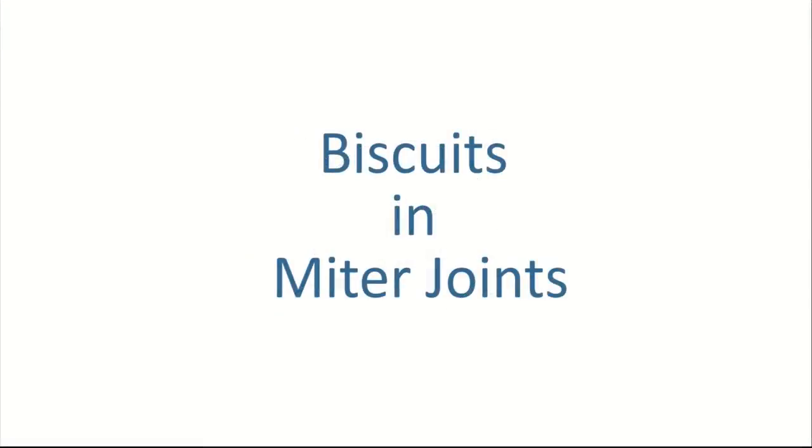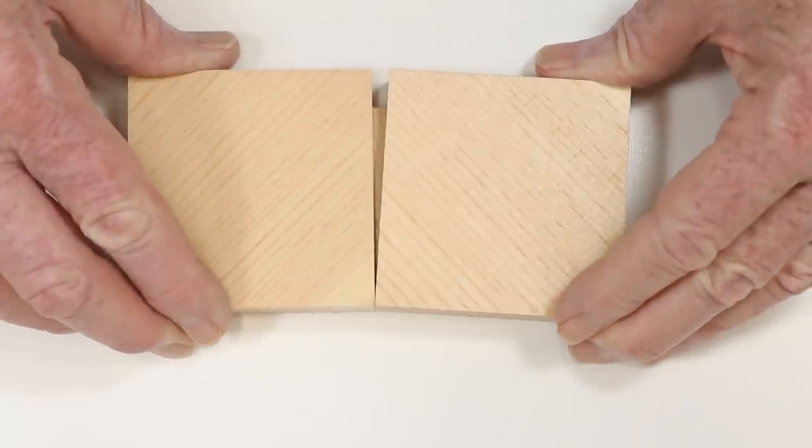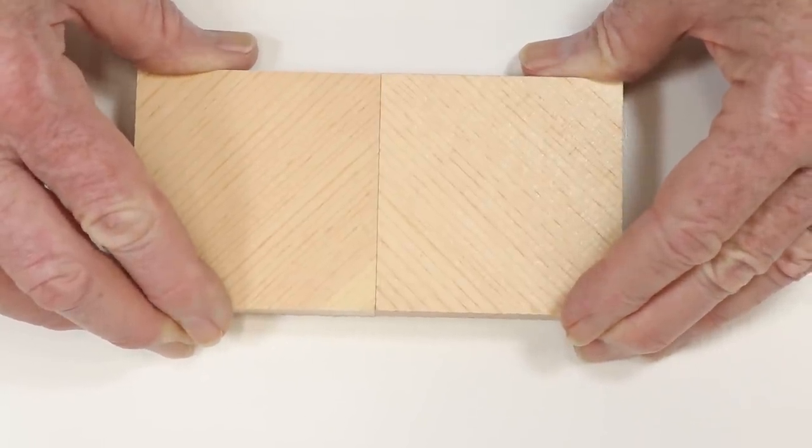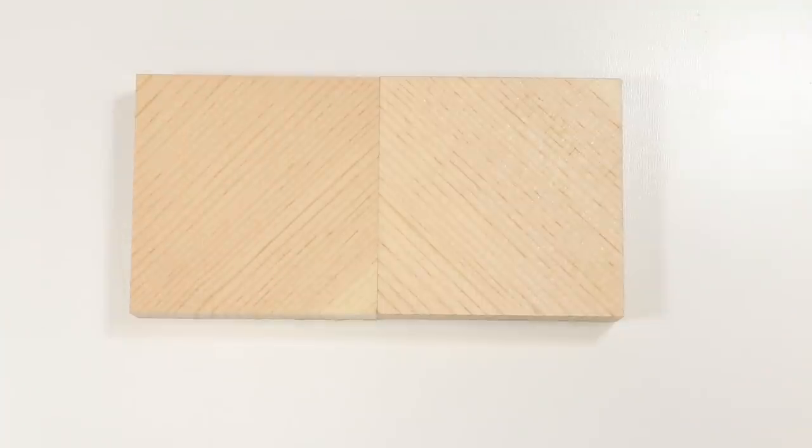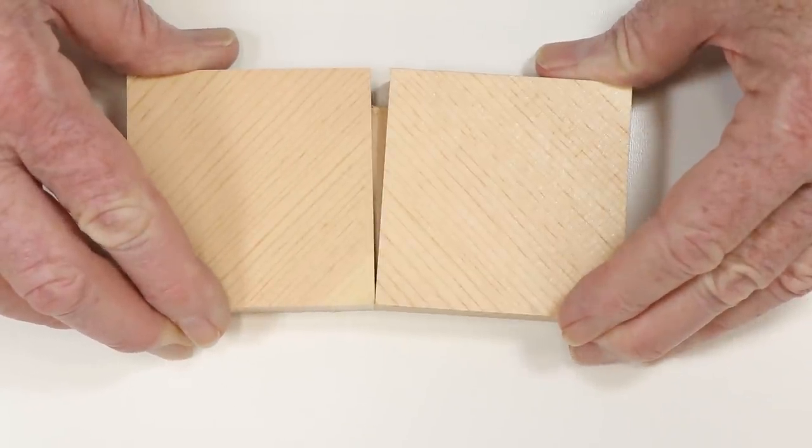Okay, what about biscuits on miter cut joints? We know from the last video that cutting wood at 45 degrees to the grain direction changes the strength of the joint. Do biscuits in miter cut samples help increase the strength of those joints?